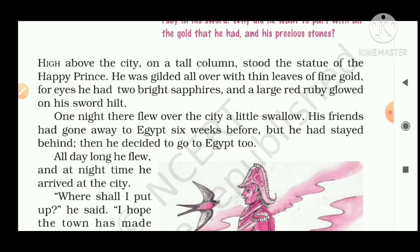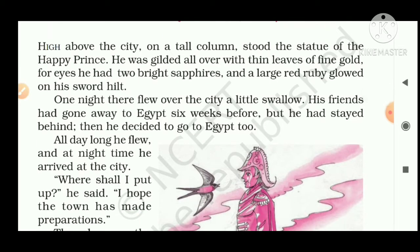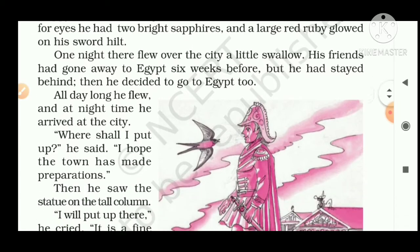The hilt means the handle of the sword, and sapphires are a precious stone. One night a little swallow flew over the city. His friends had gone to Egypt six weeks before but he had stayed behind. Then he decided to go to Egypt. One night the swallow came to this city on his way to Egypt, because the rest of his friends had gone there and were enjoying themselves, so he also decided to join them. All day long he flew and at night time he arrived at the city.